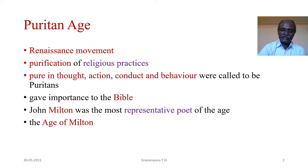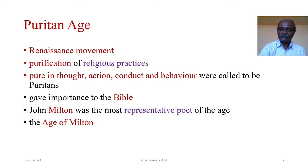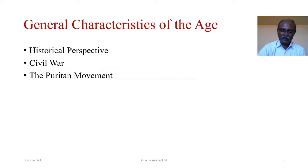The great genius John Milton was the staunch follower of Puritanism, and he was the most representative poet of the age. Therefore, this period is also called the Age of Milton. Now, we shall discuss the general characteristics of Puritan Age.